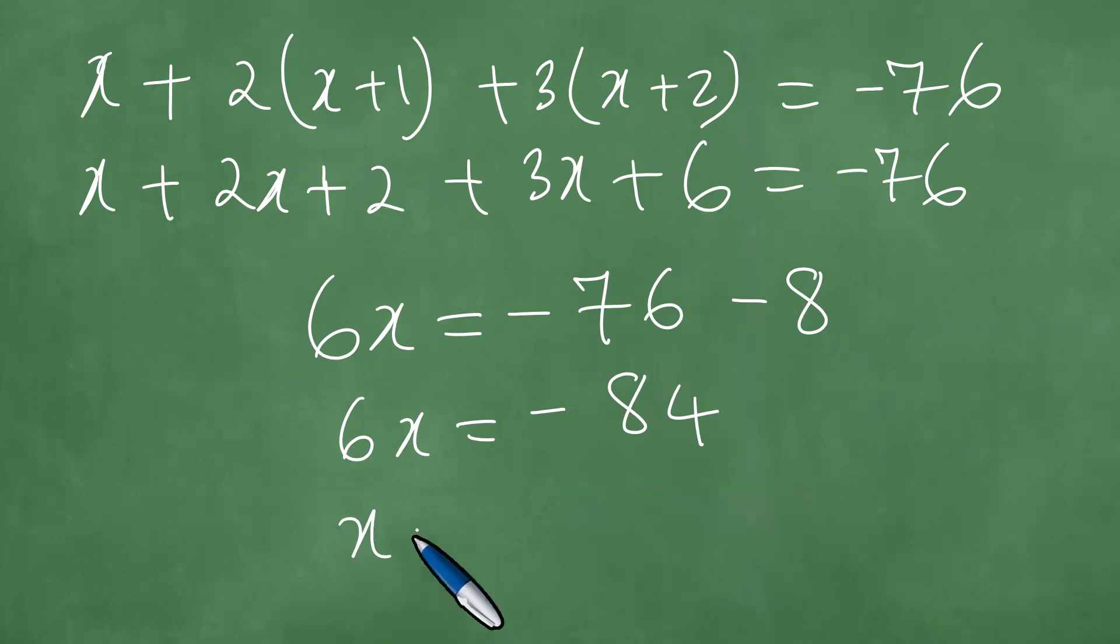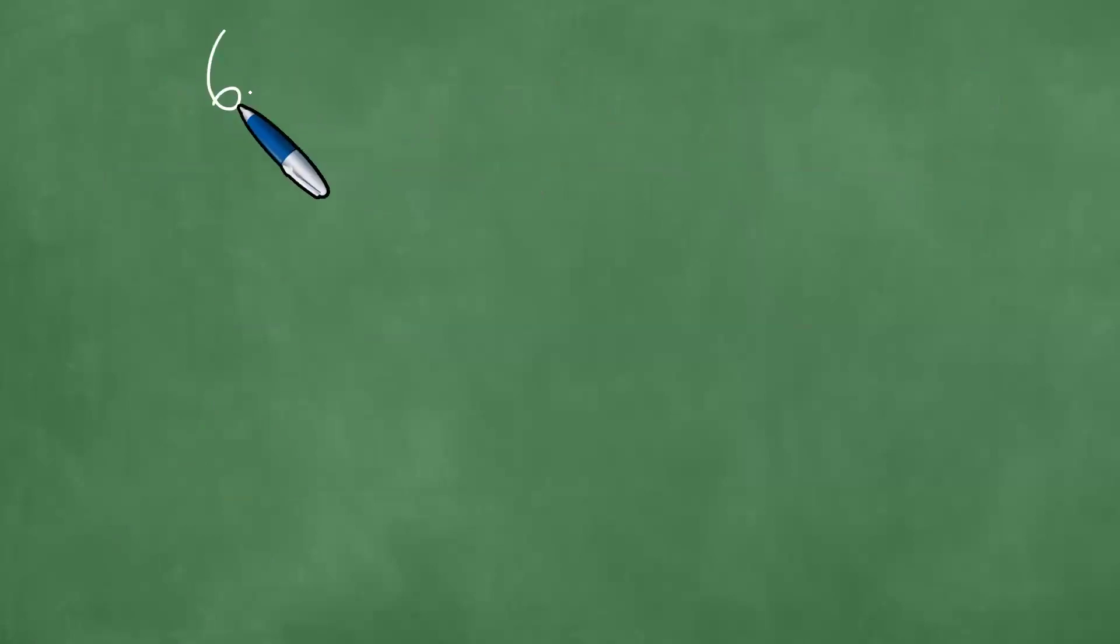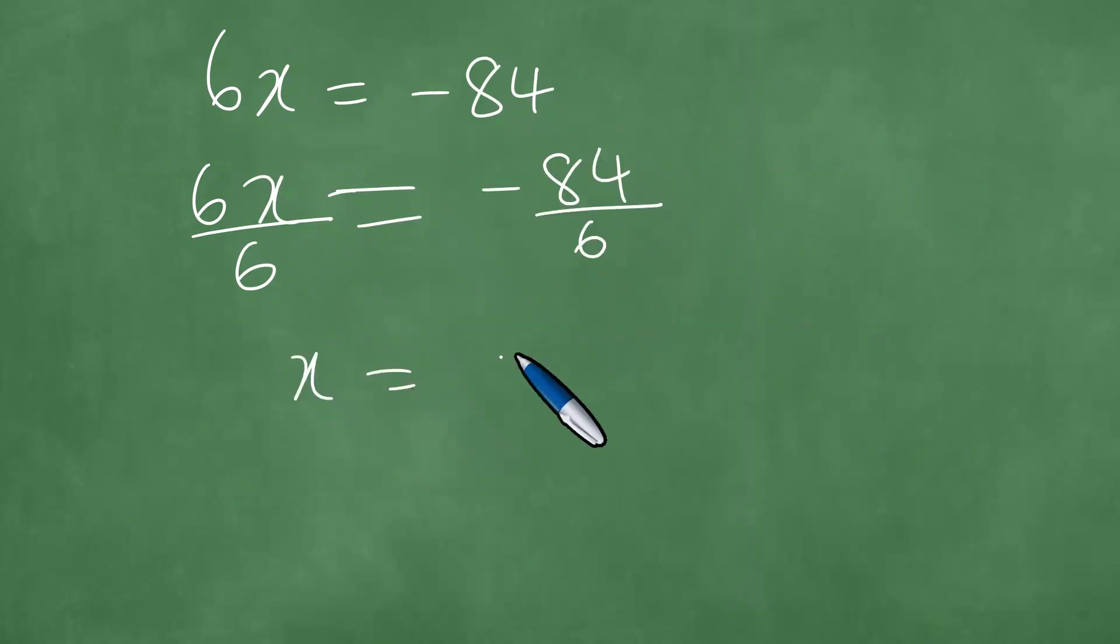If you divide by six, both left and right, we divide the left by six and the right hand side also by six, and we have x equals minus 14.